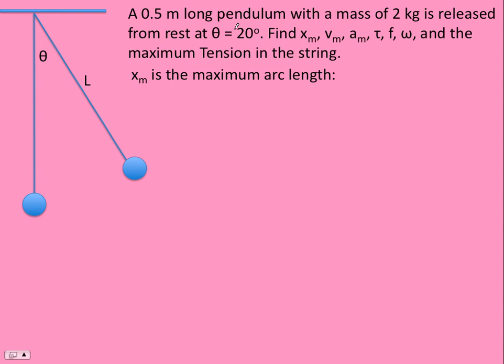Some easy pickings here at first. The amplitude is just the maximum arc length. Sometimes we use theta as a proxy for the amplitude, but it's really the arc length. So you should be able to figure out what that is.